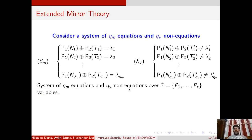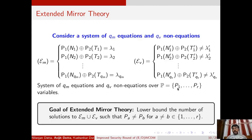In the extended mirror theory technique, we deal with a system of equations and non-equations. On the left-hand side, there is a system of bivariate affine equations, and on the right-hand side, there is a system of bivariate affine non-equations. This system of equations and non-equations is defined over R many variables. The goal of extended mirror theory is to lower bound the number of solutions to the system of equations and non-equations such that all R variables are distinct.